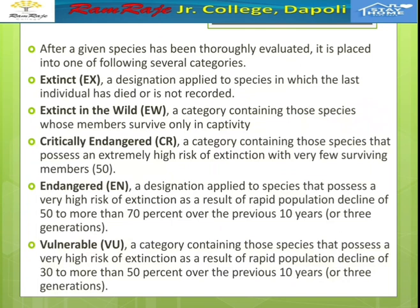Critically endangered is the category containing those species that possess an extremely high risk of extinction with very few surviving members. For critically endangered species, fewer than 50 species members may remain.